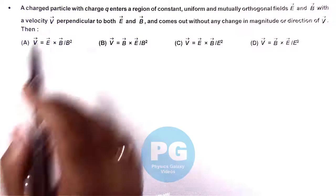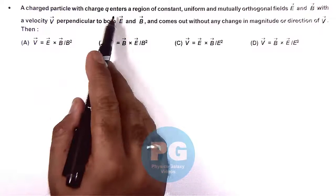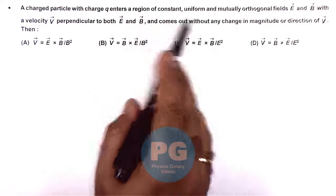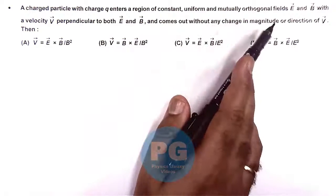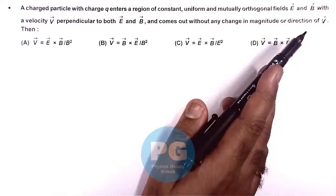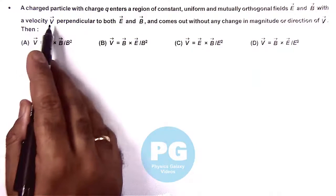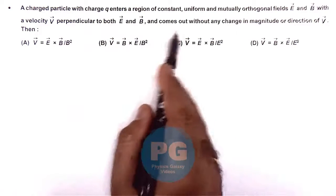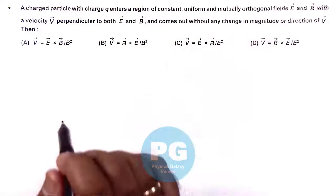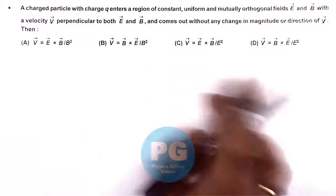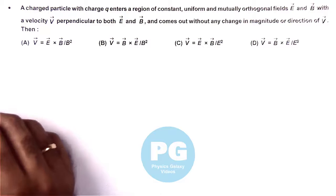In this question, we are given that a charged particle with charge Q enters a region of constant, uniform, and mutually orthogonal fields E vector and B vector, with a velocity V vector perpendicular to both E and B. It comes out without any change in magnitude or direction of velocity vector. Then we need to check the relation in V, E, and B vectors.